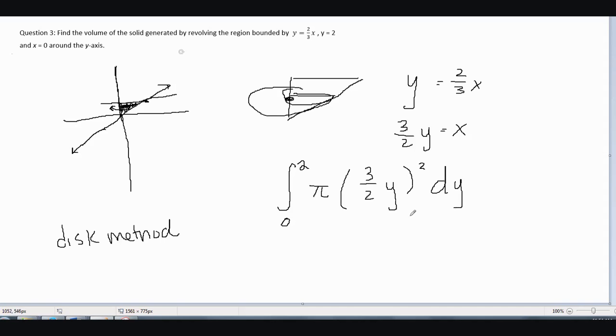This is easy to solve by hand. Pulling out π and integrating from 0 to 2 of (3/2y)² dy, the integral equals 6, so our final answer is 6π.